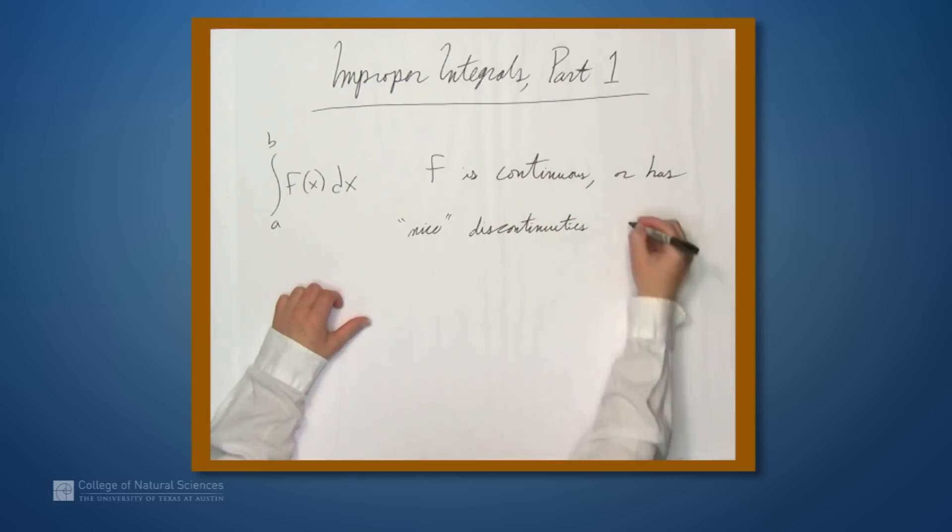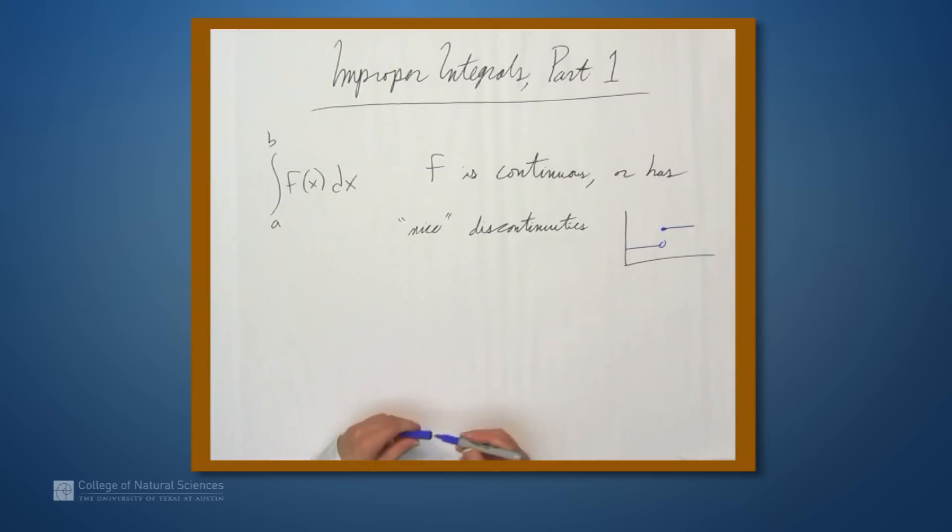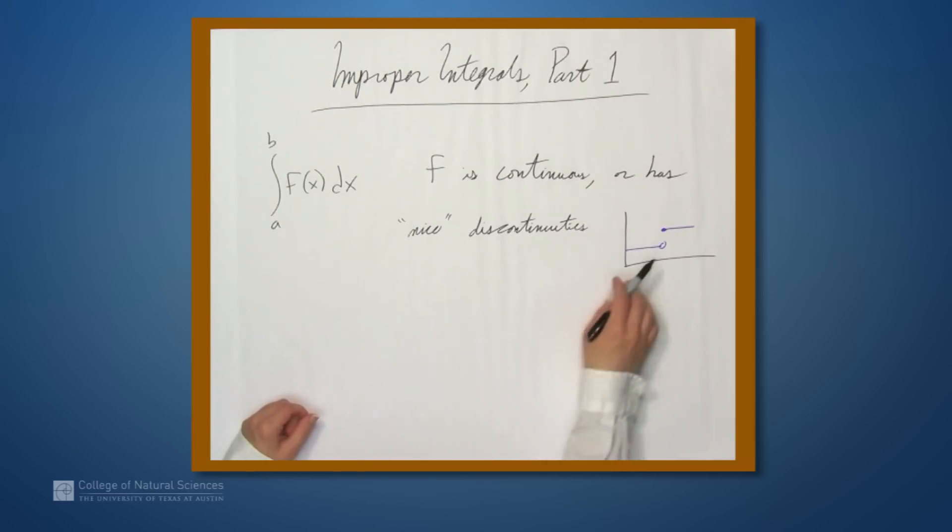For example, if we sketch a function here, something that's just a line, and then it jumps up here to another line, this function is not continuous, but it's still integrable.